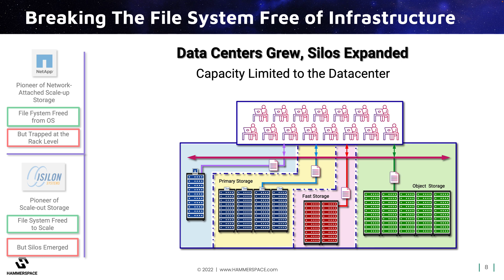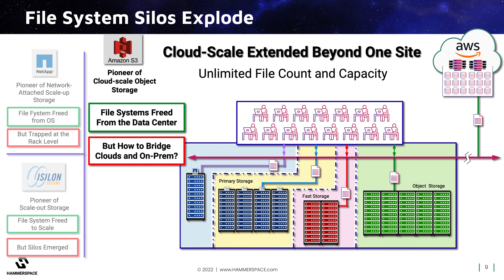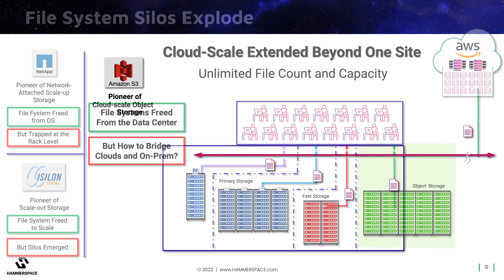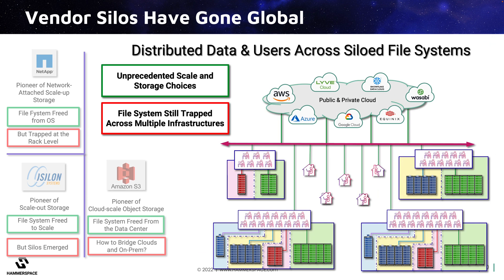As more storage types were introduced by vendors over time, the silo problem grew. Then Amazon broke file systems free from the individual data center with cloud-scale object storage that could be distributed anywhere. So now the problem of file systems being trapped in the storage layer had only gotten worse. Silos now included cloud regions and availability zones, and of course multiple cloud vendors emerged, each creating a new category of silo. The result is, the problem of shuffling copies between file systems and platforms went global, which means the cost and inefficiencies we saw with manually moving copies between PCs had now also expanded to a global scale.